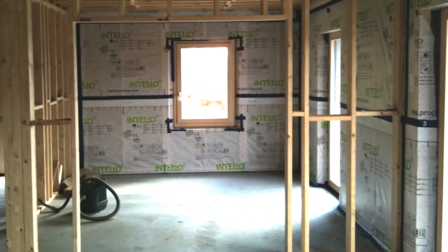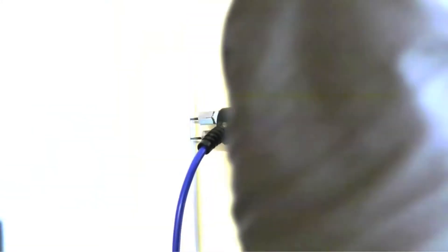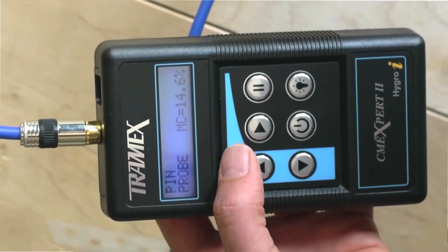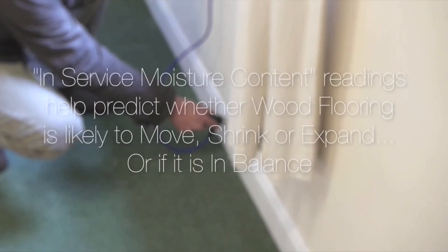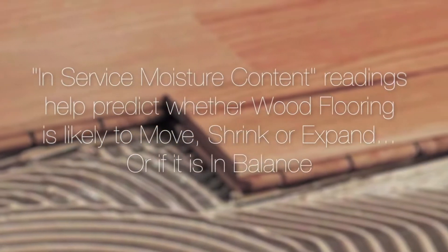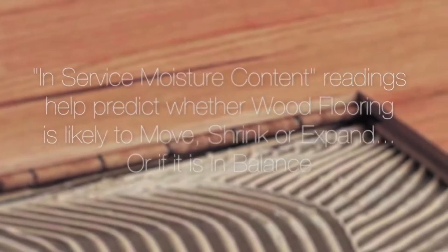Another way of identifying when wood is in balance with the building is to discreetly take moisture content readings from wood somewhere already in service within the building. By taking this in-service moisture content reading, it is easier to predict if the wood floor covering is likely to move, to shrink or expand, or if it is in balance.